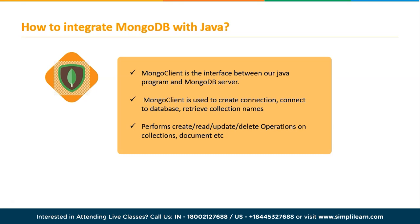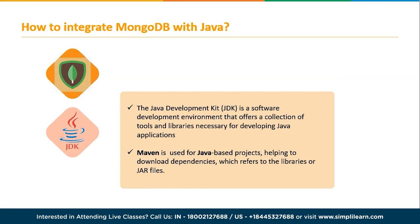MongoDB installation is important as it will connect the Mongo client, which acts as an interface between our Java program and the MongoDB server. It is basically used to create a connection to all the relevant databases, retrieve collection names present in our MongoDB database into our JDK platform, and perform CRUD operations — create, read, update, delete — on our collections and documents.